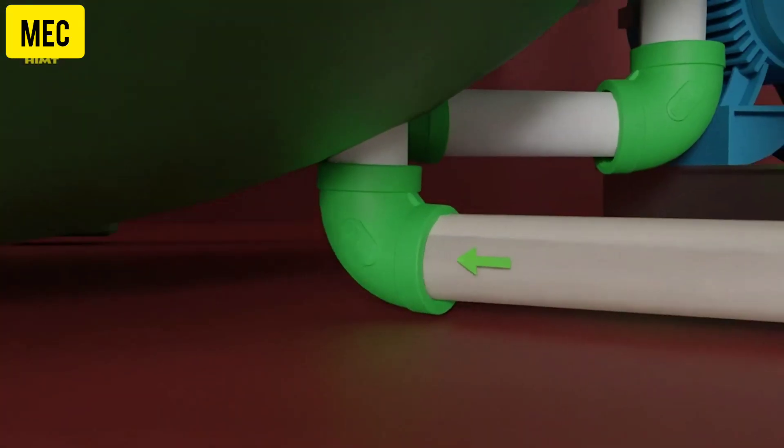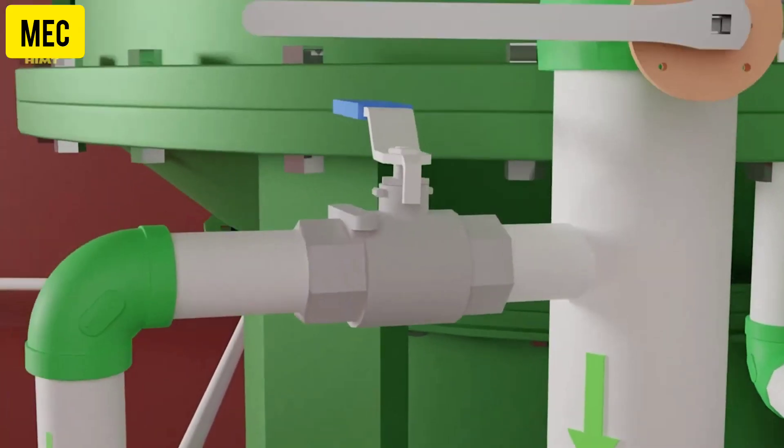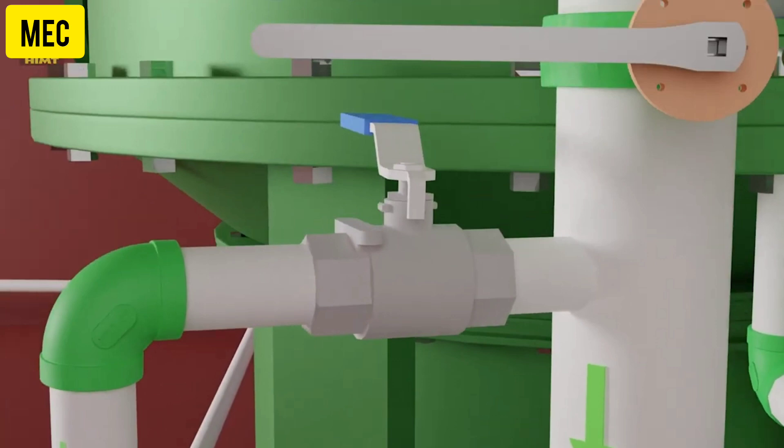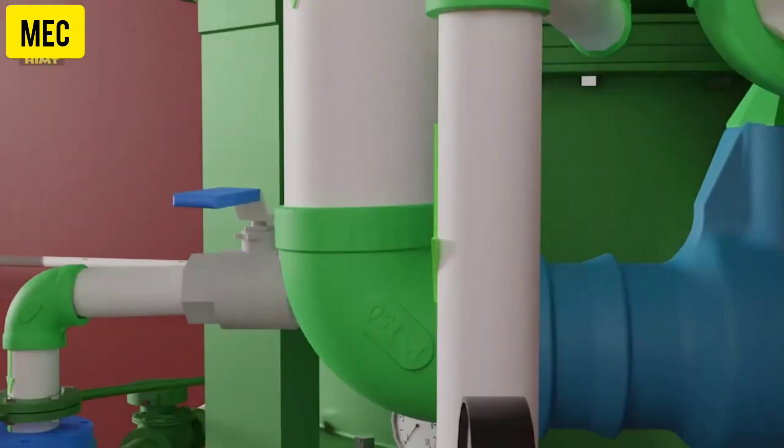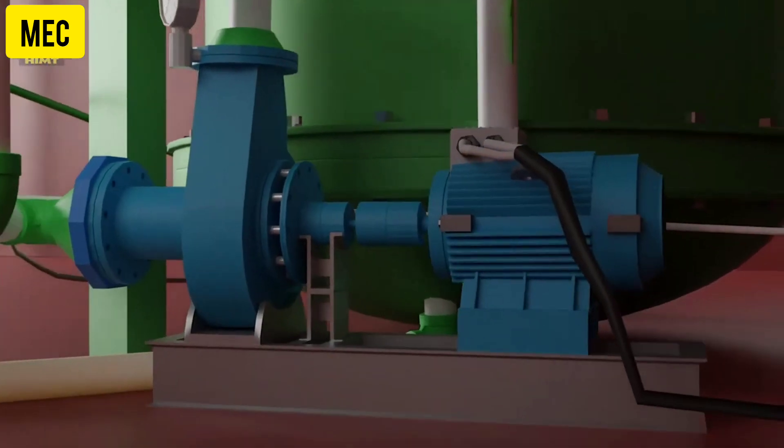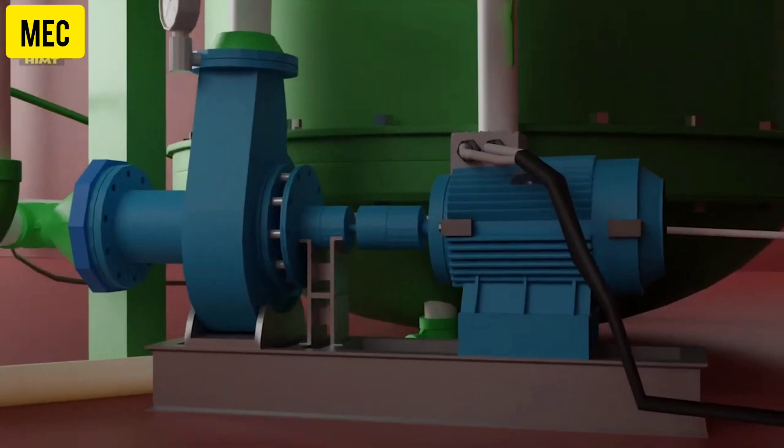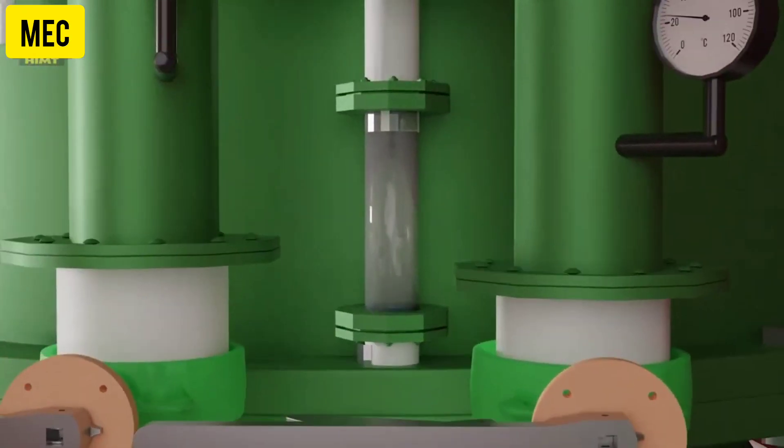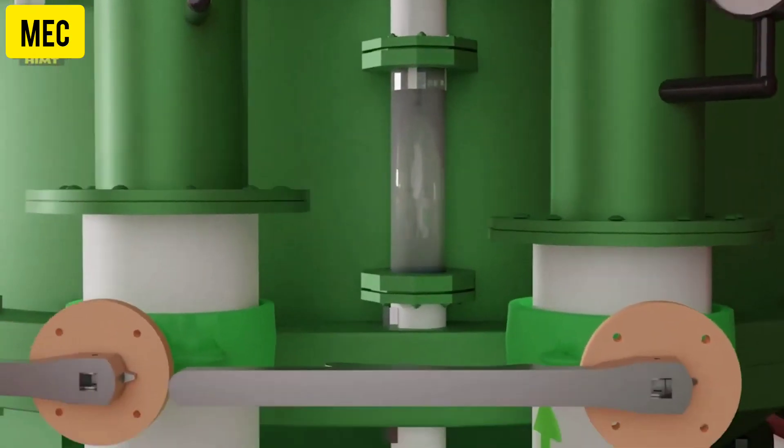This is the seawater feed inlet, and this is the feed water inlet valve which controls the flow of incoming water. Next we have the distillate pump to extract the freshwater from the condenser. A sight glass is also installed allowing for easy monitoring.